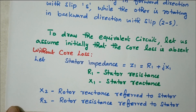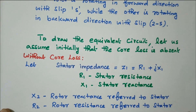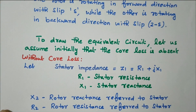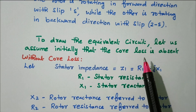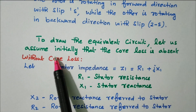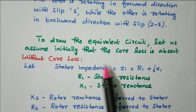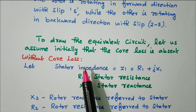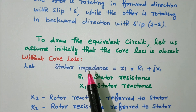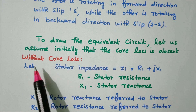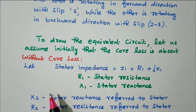There are two types of equivalent circuit: with core loss and without core loss. To draw the equivalent circuit, let us initially assume the core loss is absent. Then we'll proceed to the case with core loss.